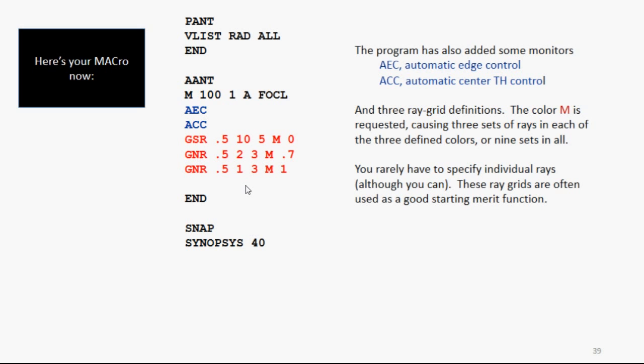The automatic merit function has added some things to it here. It's added AEC, that's Automatic Edge Control, so edges don't get too thin. It's added ACC, Automatic Center Thickness Control, so lenses don't get too thick. And it added three of these requests, which generate a grid of rays to correct the image quality.